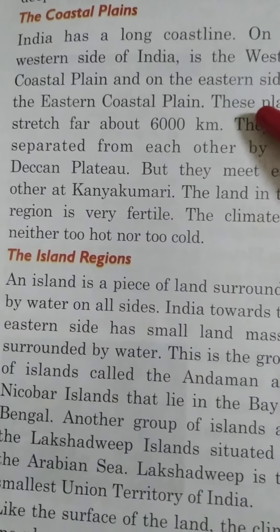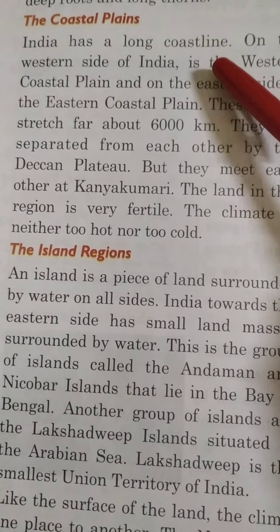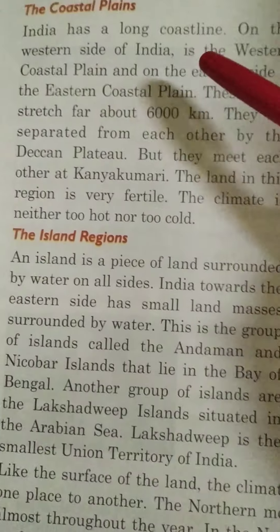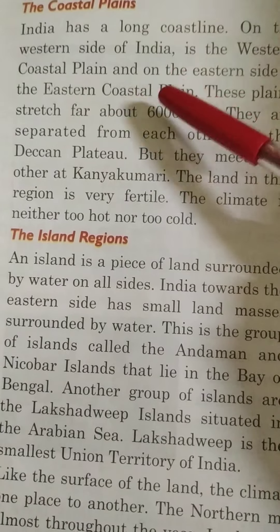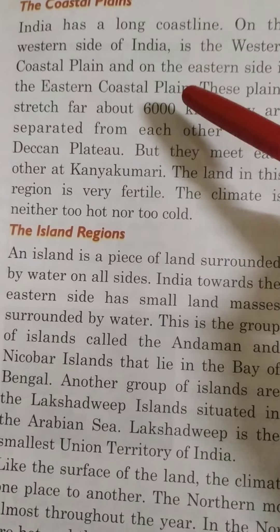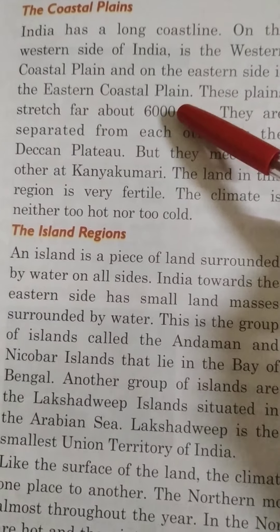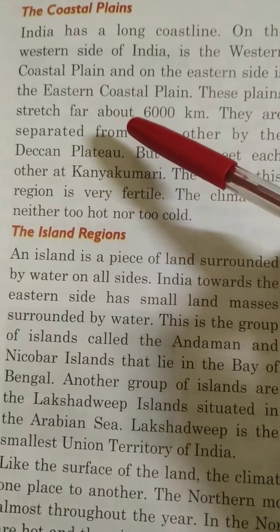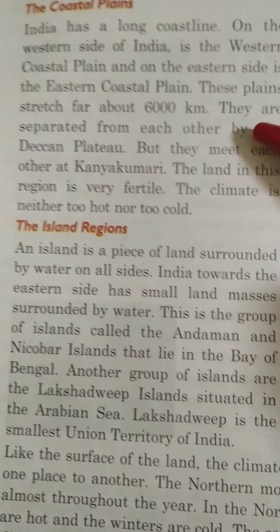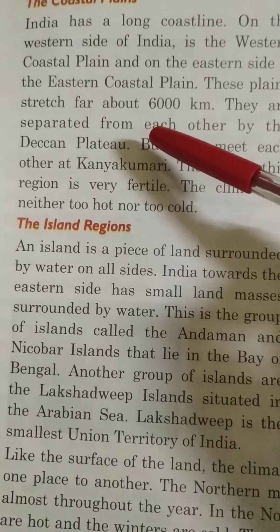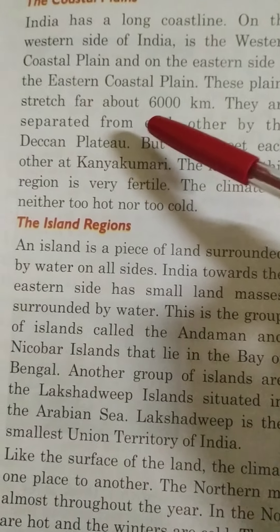India has a very long coastline. On the western side of India is the western coastal plain, and on the eastern side is the eastern coastal plain. These plains spread for about 6000 km.